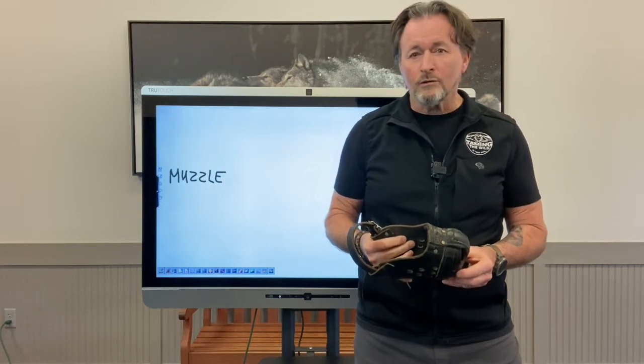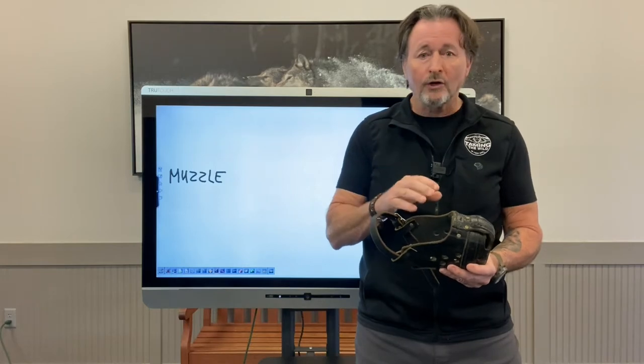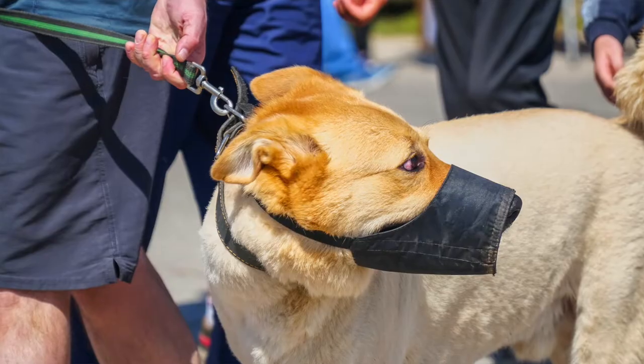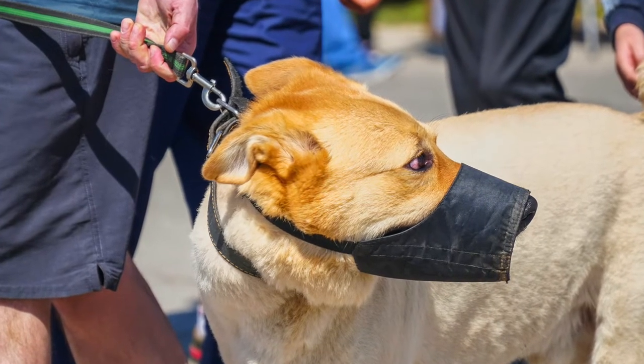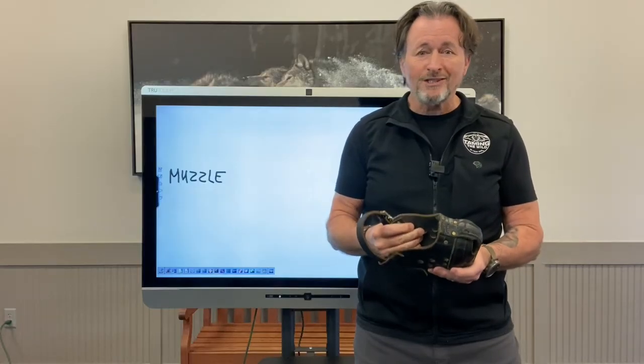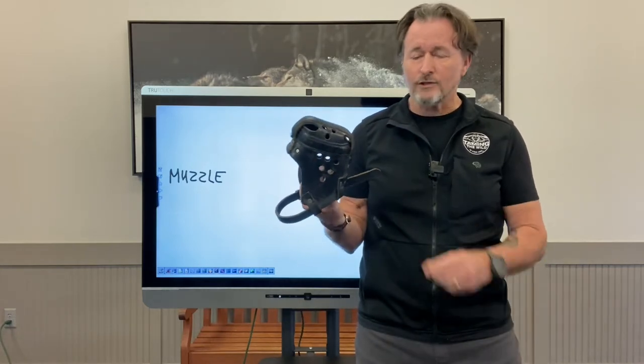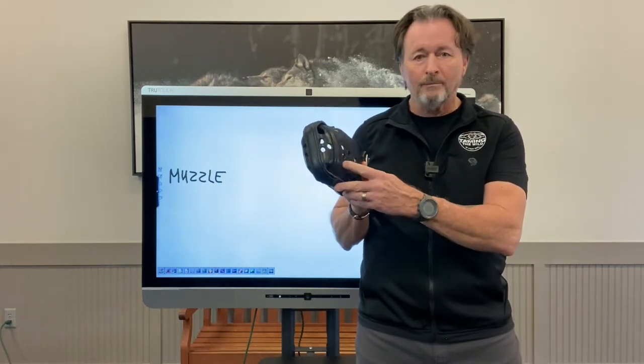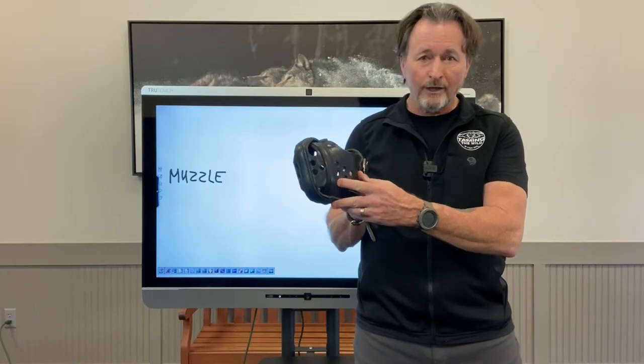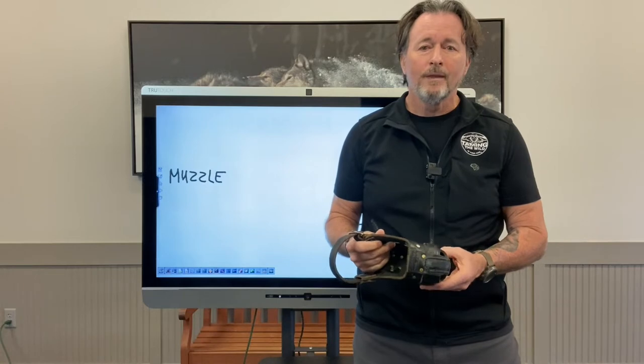First of all, what is a muzzle? A muzzle is a device that we will often put on our dogs to prevent them from biting during certain situations. And they come in various sizes, as you can imagine, and different types of material, everything from wire to nylon to leather like this one. And they usually have some ability for the dog to breathe through the muzzle. Otherwise, you run the risk that they can overheat.